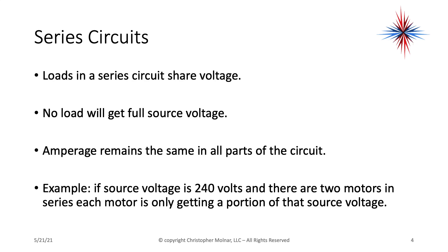Amperage remains the same in all parts of a series circuit. For example, if the source voltage is 240 volts and there are two motors in series, each motor only gets a portion of the source voltage. There's another major problem: if any part of the series circuit opens — a bulb burns out, a motor fails, or a switch is open — the whole circuit fails.